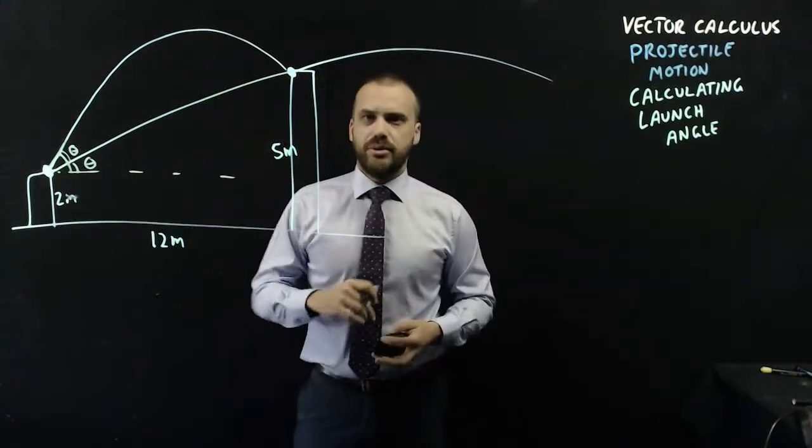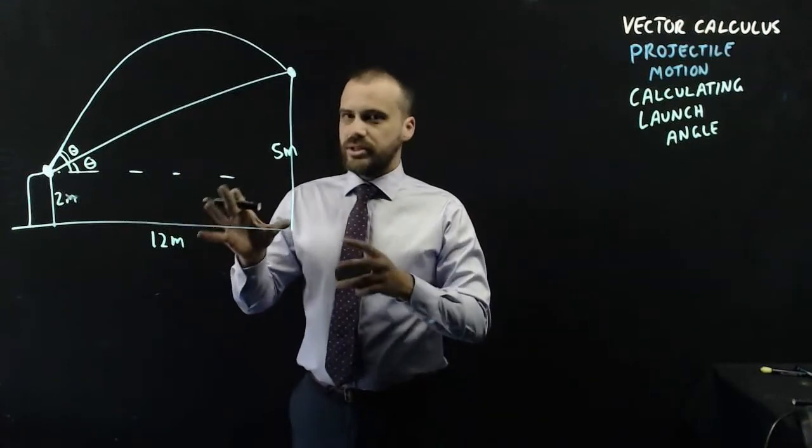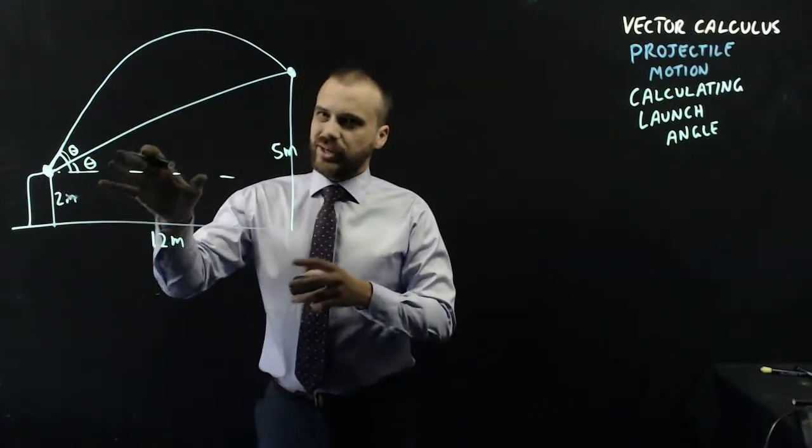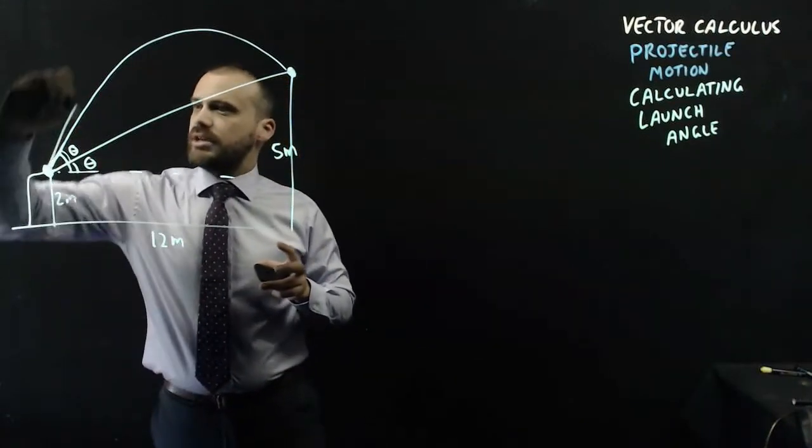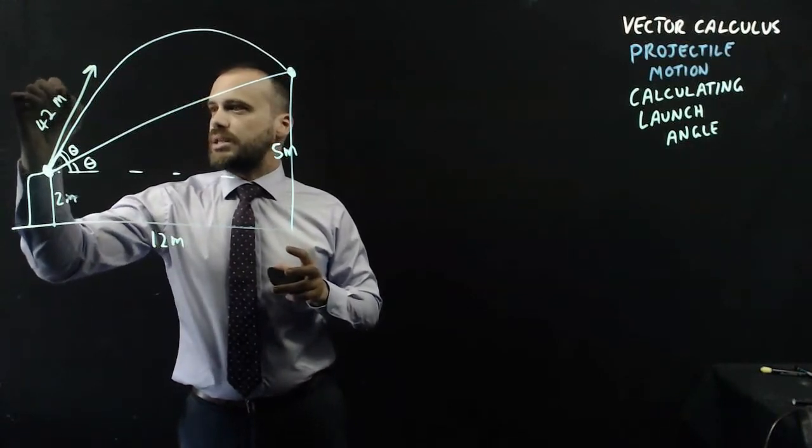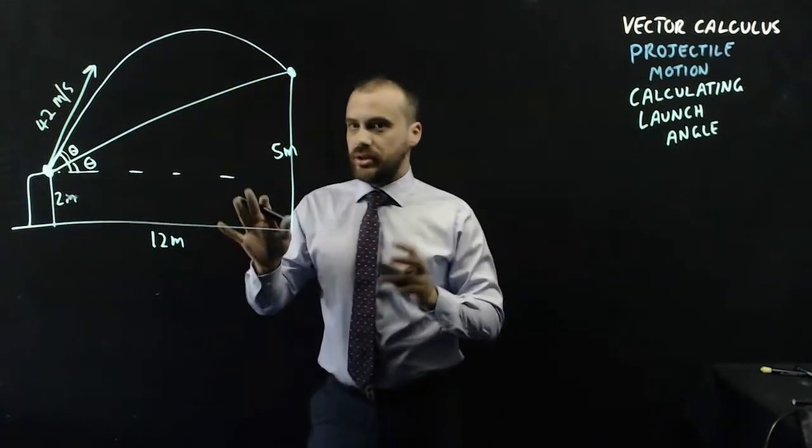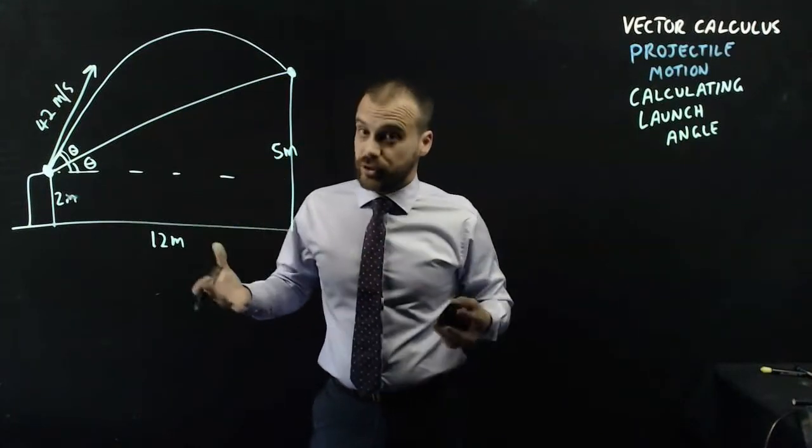Maybe not quite enough information here, because I'm also going to need to know, if I don't know the angle, I at least need to know its initial velocity. All right, so let's give it an initial velocity of 42 meters per second. All right, that way we can start working with this now, because we have an initial velocity.